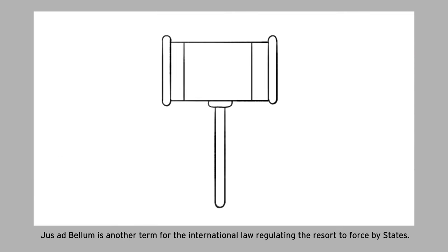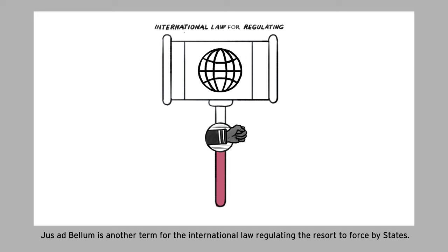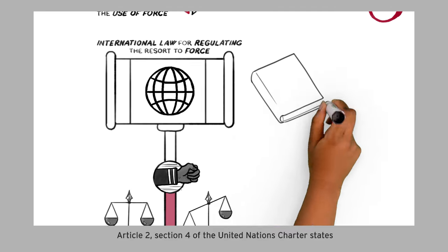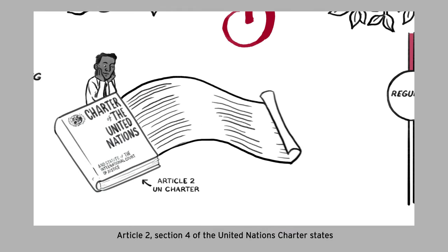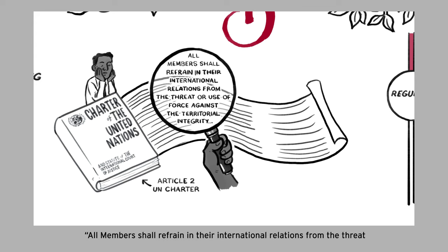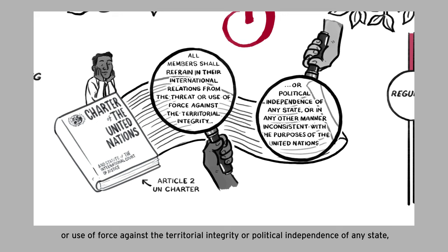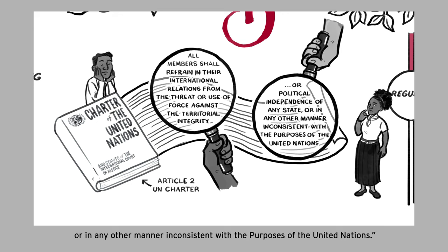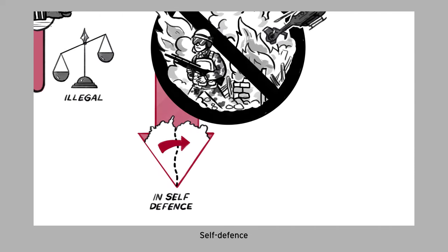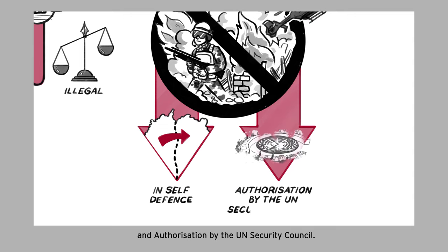Jus ad bellum is another term for the international law regulating the resort to force by states. This law determines whether such use of force is legal or not. Article 2, Section 4 of the United Nations Charter states: 'All members shall refrain in their international relations from the threat or use of force against the territorial integrity or political independence of any state, or in any other manner inconsistent with the purposes of the United Nations.' Exceptions to this prohibition are self-defense and authorization by the UN Security Council.